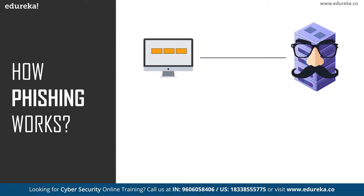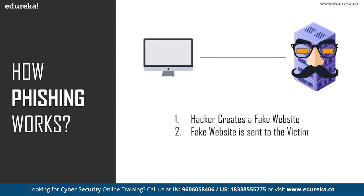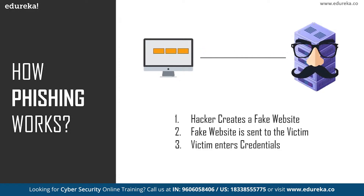Now let's see what the steps of a phishing attack are. The first step is the hacker creates a fake website — a fake of a genuine website — to trick the victim into entering credentials. The next step is to send this fake website to the victim, because if the victim goes to the web application by himself he reaches the genuine website, not the fake one. The third step is the victim thinks the fake website is trustworthy and enters credentials, and finally the hacker gets the credentials.